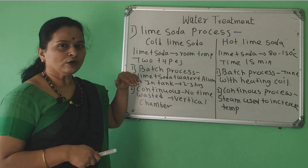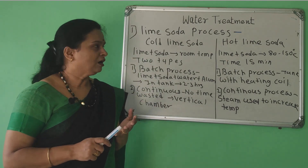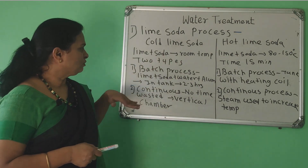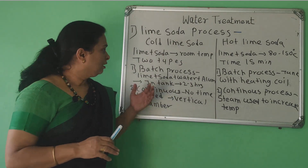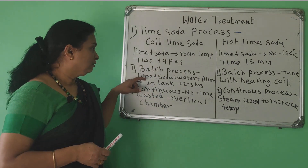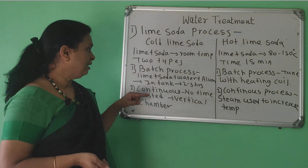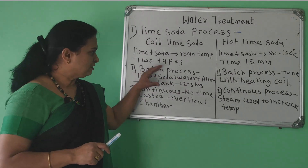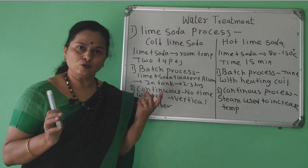In the cold lime soda process, lime soda is mixed with hard water at room temperature. In the batch process, a steel tank of fixed capacity (e.g., 50 litres, 100 litres) is used. Lime, soda, water, and alum — which acts as a coagulant — are added to the tank. Softening the water takes 2 to 3 hours in the batch lime soda process.